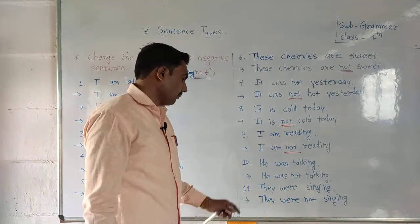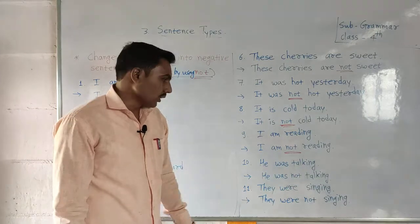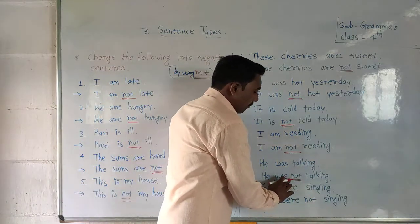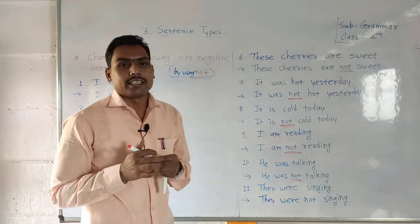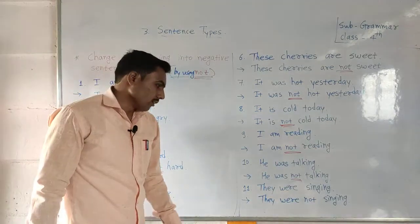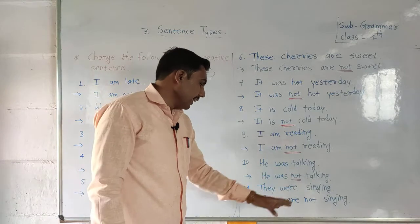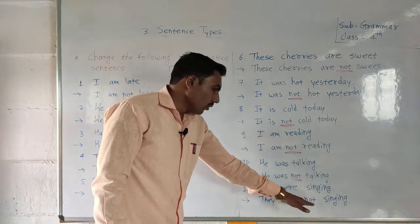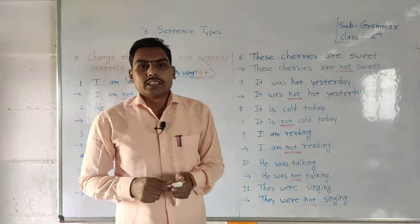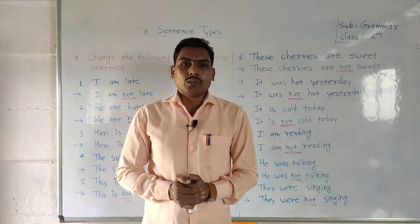Example number ten: 'He was talking.' The negative is: 'He was not talking.' 'Not' is attached to the positive sentence. Now the last example: 'They were singing.' Negative: 'They were not singing.' In this way you can convert any positive sentence into a negative sentence. I hope you can easily understand this. The remaining part we will see in the next video. Thank you.